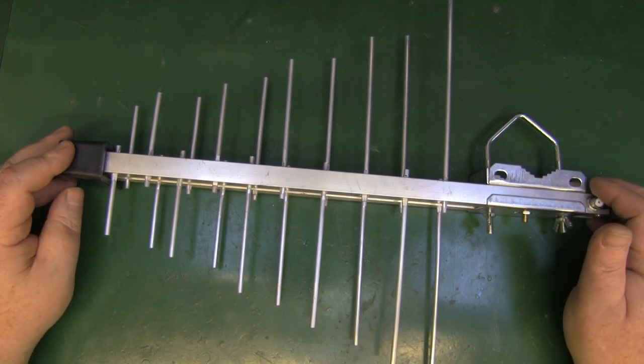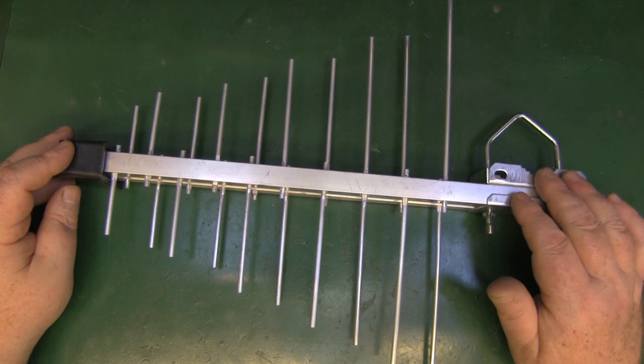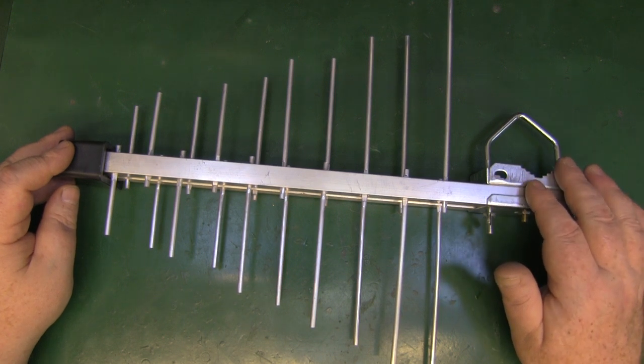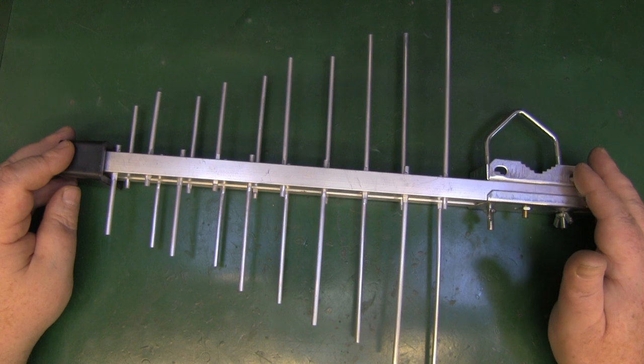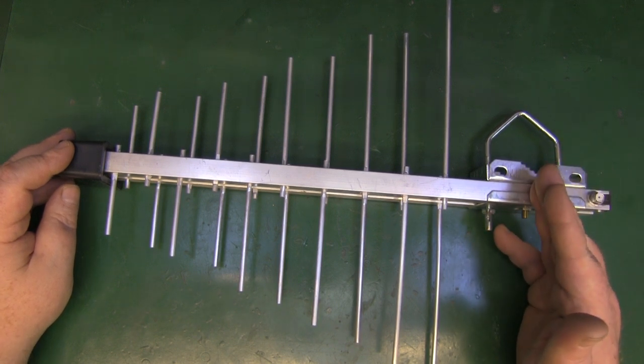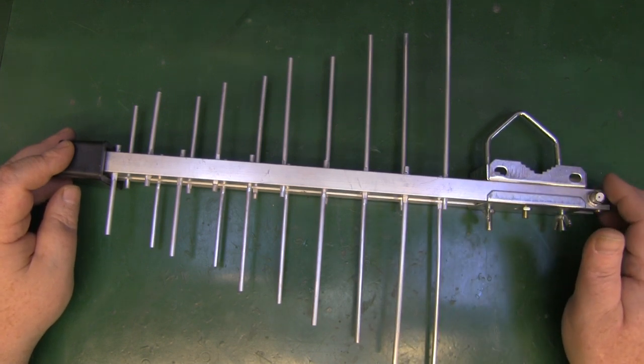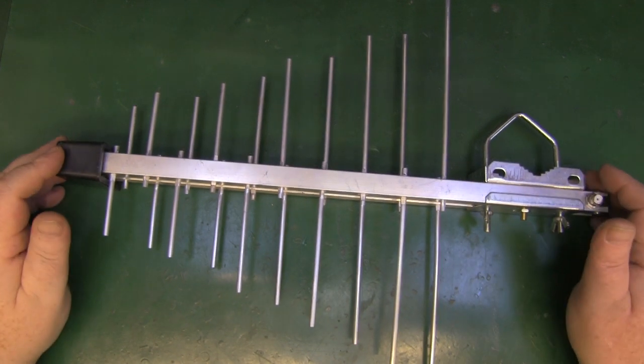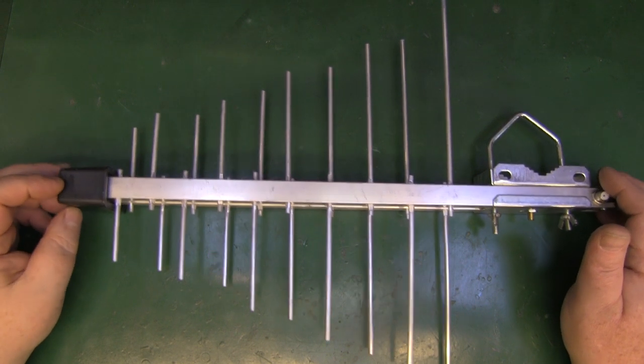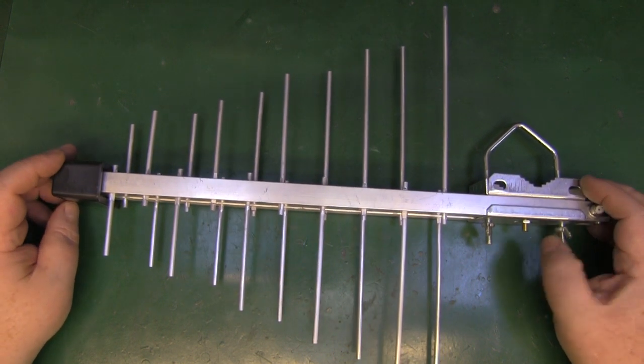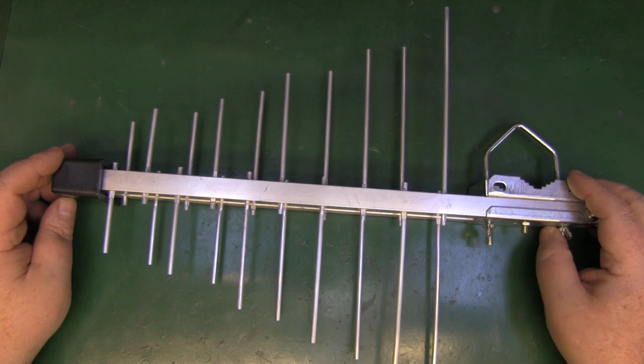There's the more traditional Yagi antenna and there's this one here that is the log periodic antenna. The main difference between the two antennas is that the Yagi tends to have a reflector, a back reflector on the aerial, but the log periodic does not have a reflector.